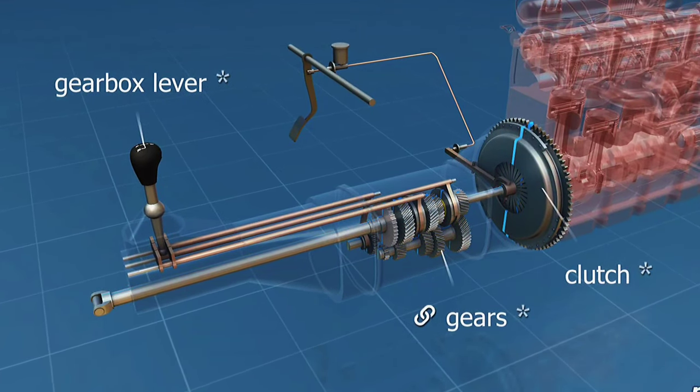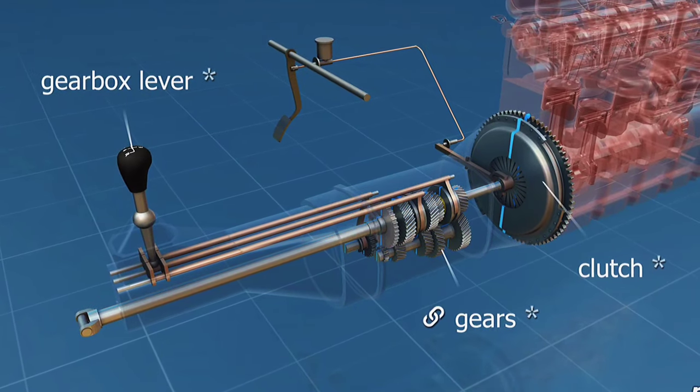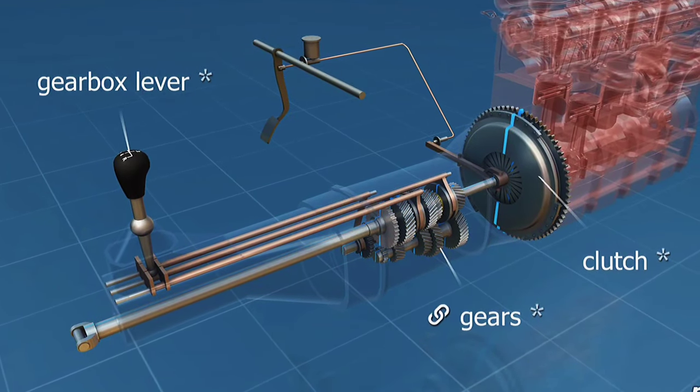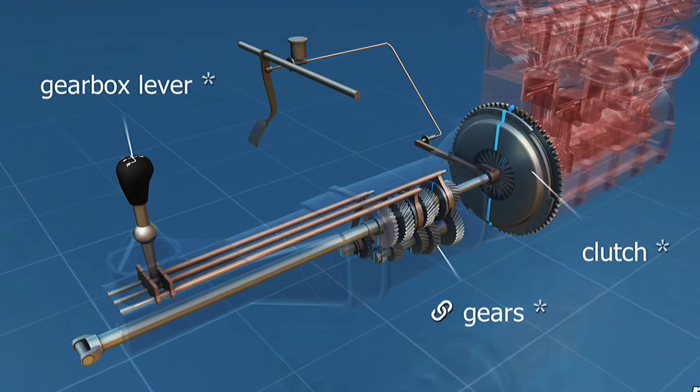To enable the engine to move the gears, a connection has to be established between them, which can be disengaged if needed. This is the job of the clutch.